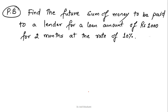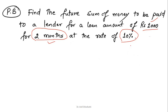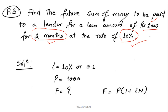Let's understand this simple interest concept using a problem. Find the future sum of money to be paid to a lender for a loan amount of Rs. 1000 taken for 2 months at an interest rate of 10%. So the person is taking a loan of Rs. 1000 for 2 months at an interest rate of 10%. Here P, the principal, is Rs. 1000, the rate of interest is 10% or 0.1, and we need to find the future amount to be paid. We know the equation F = P × (1 + i × N).